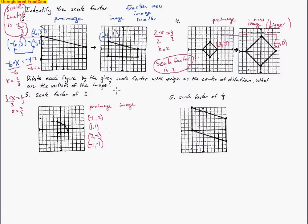From here we need an image with a scale factor of 3, meaning we multiply: 3 times the x-value and 3 times the y-value. So I'm going to triple each of these numbers. That gives me negative 3 and 6 — I multiplied negative 1 by 3 and 2 by 3. The next one is 3 times 1 and 3 times 1, so 3, 3. Then 2 times 3 gives 6, and negative 1 times 3 gives negative 3. The last one: negative 1 times 3 is negative 3, and negative 1 times 3 is another negative 3.